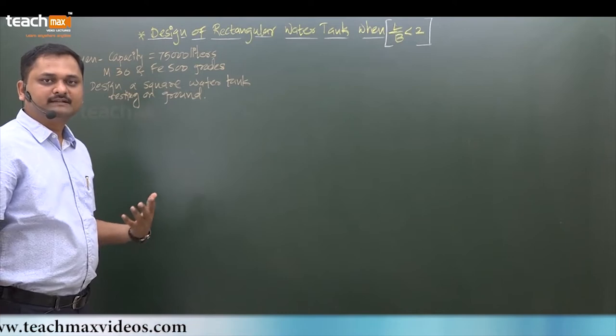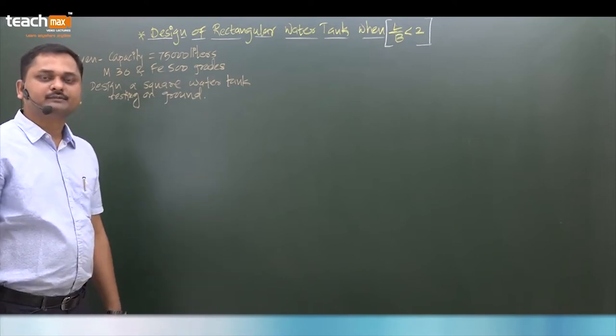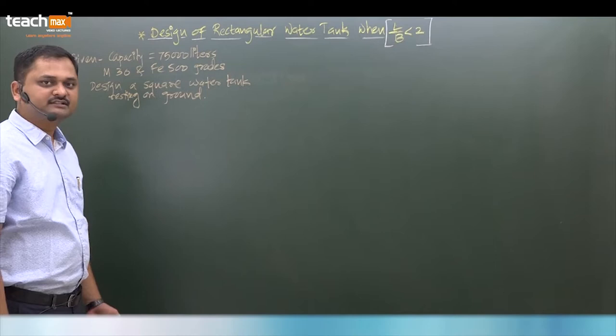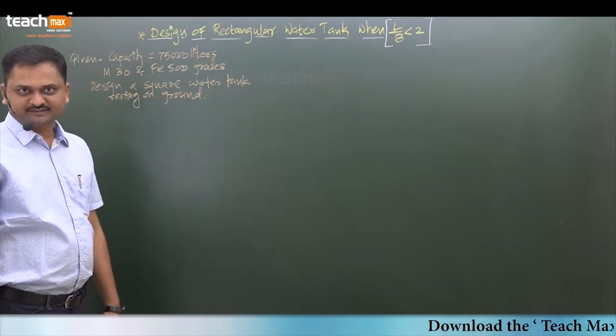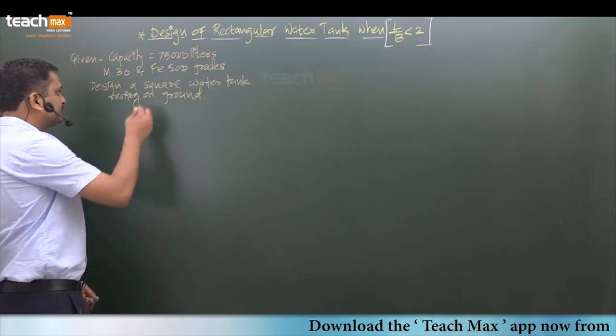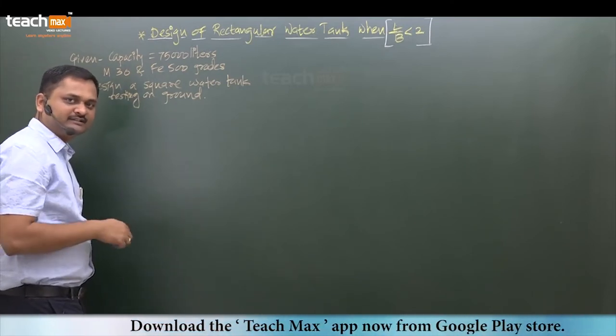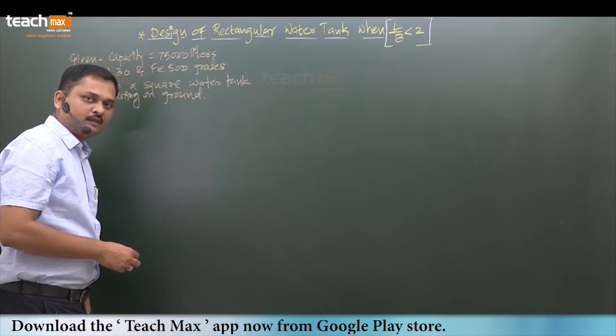For which we have to design a square water tank resting on the ground. Definitely here L by B is less than 2, which is considered. Based on the question given, you can assume whether L by B is less than 2 or greater than 2.